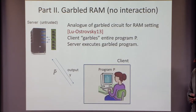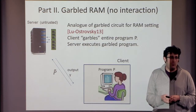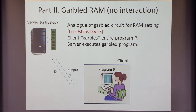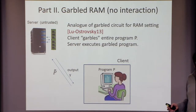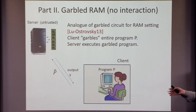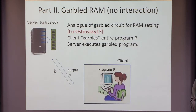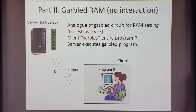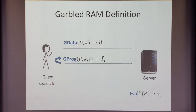The cost of garbling and the size of the garbled program is as big as the RAM runtime of the original program. The client isn't saving any work — he's running the program himself without having the data. He does the work of running the program without knowing the data, creates the garbled program, sends it to the server; the server knows the data and can execute it. There's no saving of work — the client does all the work of running the program — but we're saving on rounds: instead of running the program by doing each read independently through a protocol with the server, we do it all in one shot.